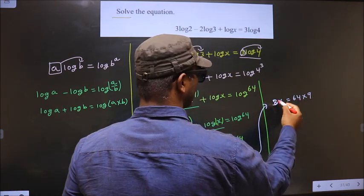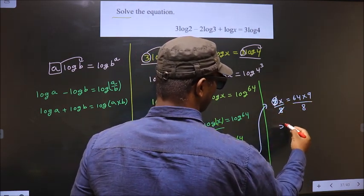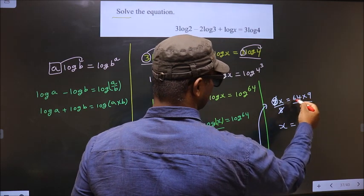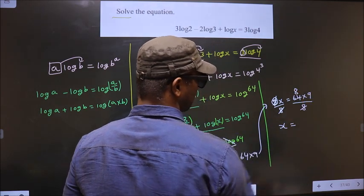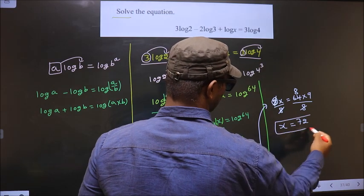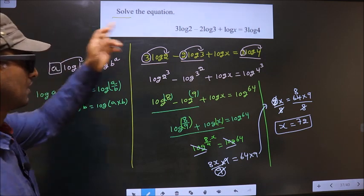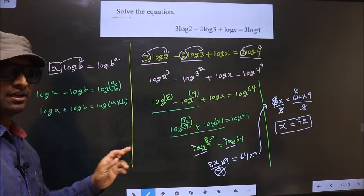Now remove the 8 by dividing by 8. This cancels out and you get x equals 64 divided by 8, which is 8, times 9, which equals 72. This is our answer. Am I clear?